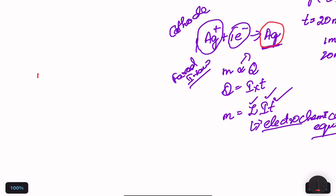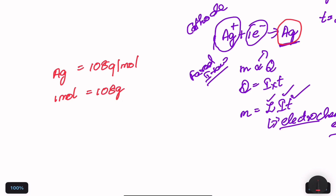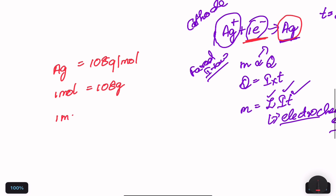Molar mass means the mass of one mole of a substance. The molar mass of silver is 108 grams per mole, meaning 1 mole of silver has a mass of 108 grams.